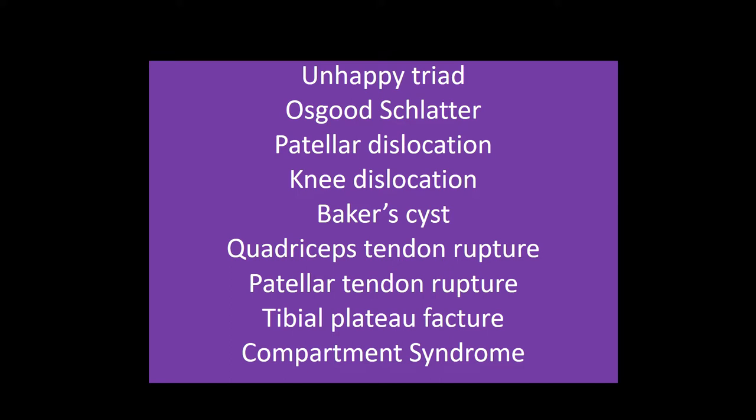Compartment syndrome can occur with trauma including open fractures, burns, and tight casts. It's more common with tibial and forearm fractures. It's a clinical diagnosis characterized by the six Ps: pain, pallor, paresthesia, paralysis, poikilothermia, and pulselessness. Treatment is fasciotomy.